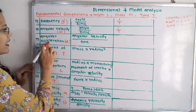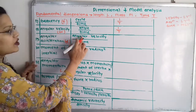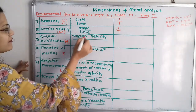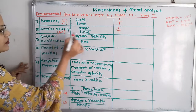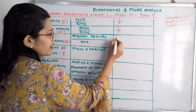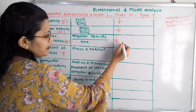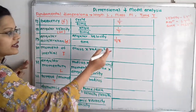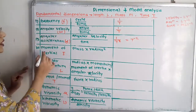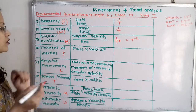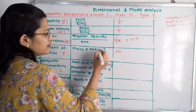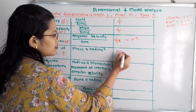Then angular acceleration, notation alpha, equals angular velocity by time. Angular velocity is 1 by T, divided by T, giving 1 by T squared, which is T raised to minus 2. Then moment of inertia, notation I, equals mass into radius squared. Mass is M and radius relates to length L, so the dimension is M into L squared.